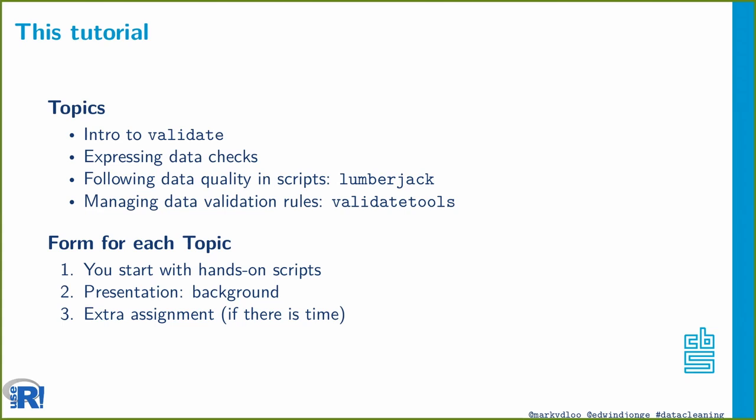In the third part we'll see how to automate data quality checking and how to follow a dataset while it's being processed using the lumberjack package. In the fourth part, we step back and think about when and why data quality checks are valid — because every rule implies an assumption on your data. Data quality checks themselves have a kind of life cycle, and we have tools to work with that.